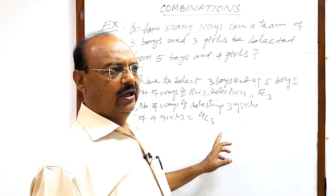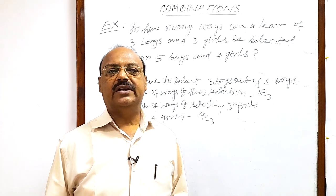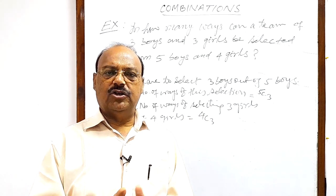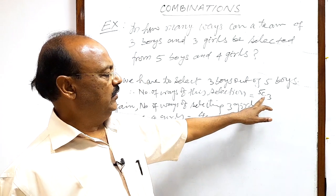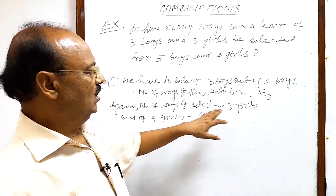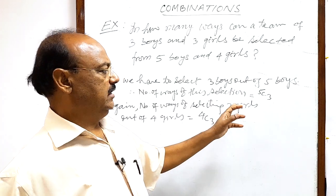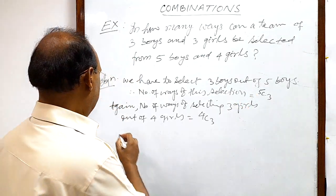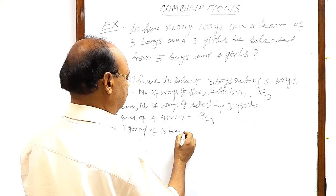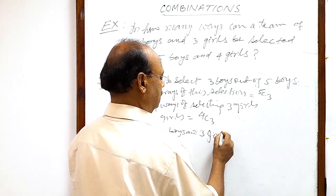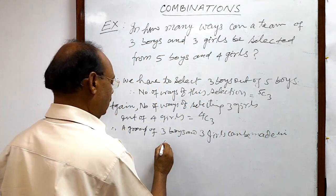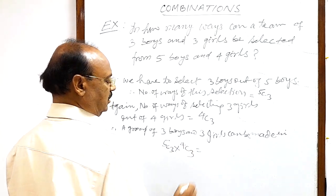The fundamental principle of counting says that if one part of a job can be done in m ways and the rest of the job can be done in n ways, then the entire job can be done in m into n ways. So we selected three boys in 5C3 ways and three girls in 4C3 ways. Making a team means selecting three boys and three girls, so we multiply these two numbers. Therefore, a group of three boys and three girls can be made in 5C3 into 4C3 ways.